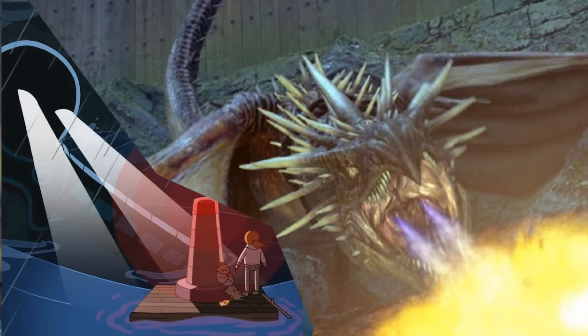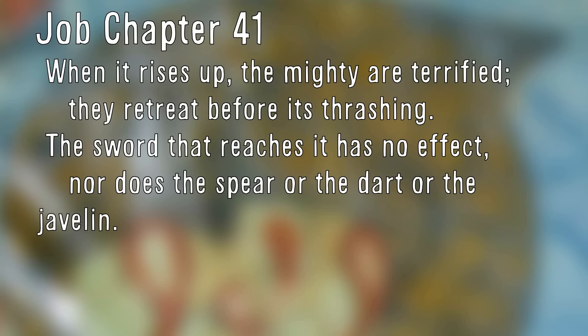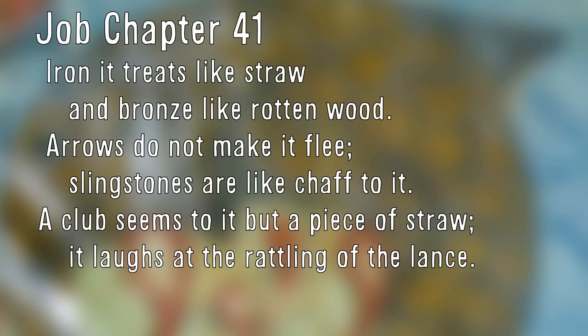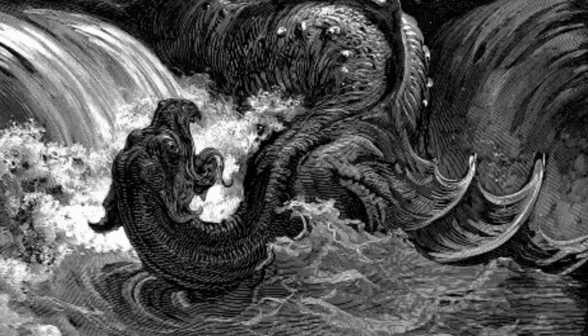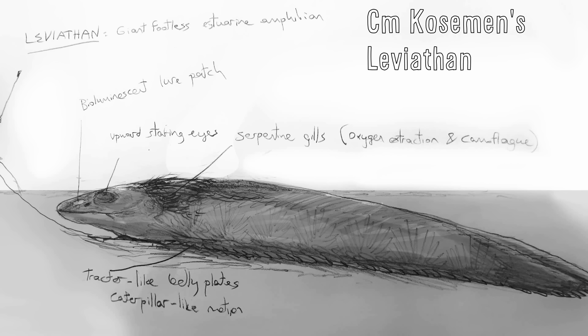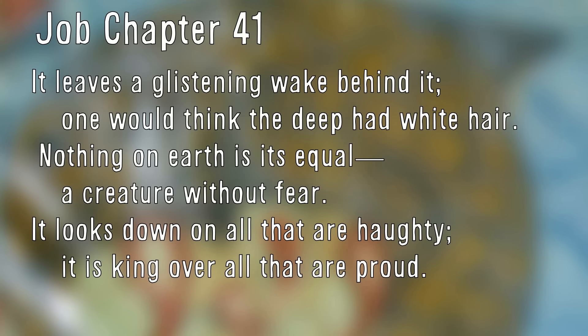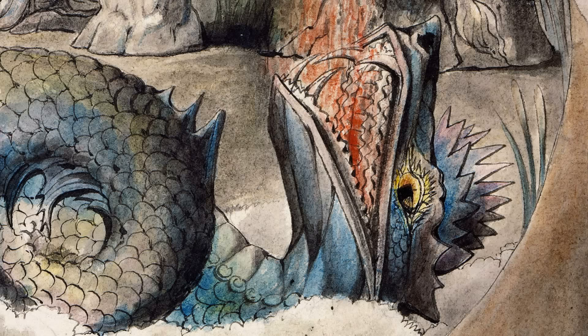'Strength resides in its neck, dismay goes before it. The folds of its flesh are tightly joined — they are firm and immobile. Its chest is hard as rock, hard as a lower millstone. When it rises up the mighty are terrified; they retreat before its thrashing. The sword that reaches it has no effect, nor does the spear or dart or javelin. Iron it treats like straw and bronze like rotten wood. Arrows do not make it flee; sling stones are like chaff to it. A club seems to it but a piece of straw — it laughs at the rattling of a lance.' Leviathan is again very strong and very large — unbelievably large — with no human having any chance against it. 'Its undersides are like jagged potsherds, leaving a trail in the mud like a threshing sled. It makes the deep churn like a boiling cauldron and stirs up the sea like a pot of ointment. It leaves a glistening wake behind it; one would think the deep had white hair. Nothing on earth is its equal — a creature without fear. It looks down on all that are haughty; it is king over all that are proud.'